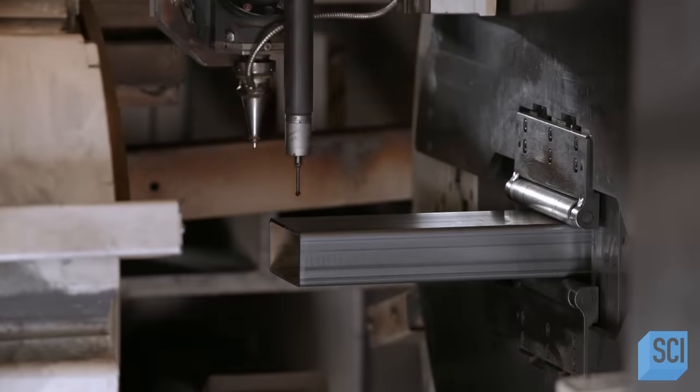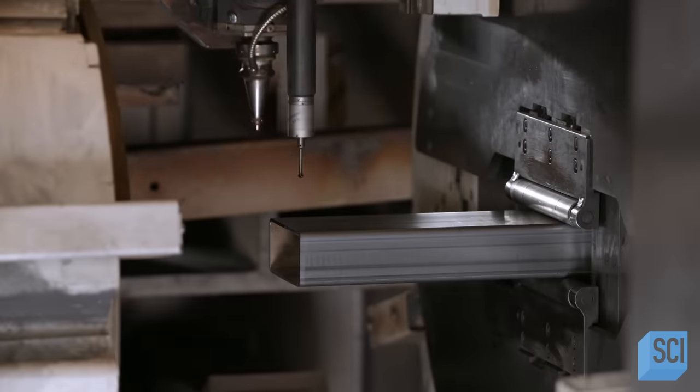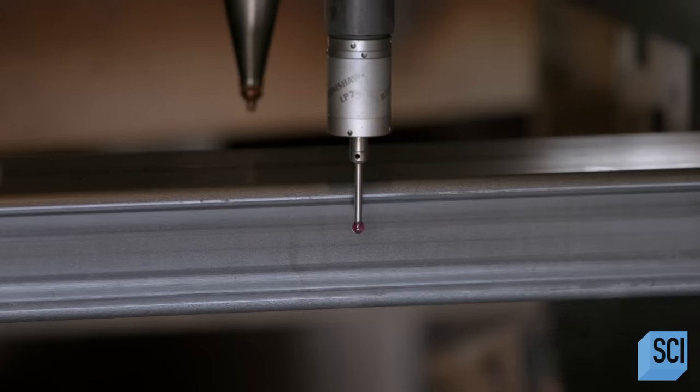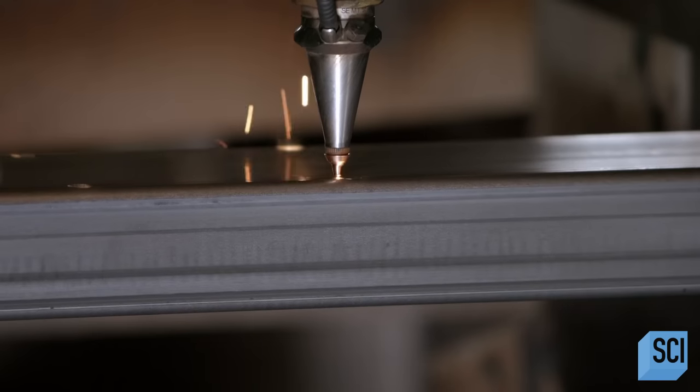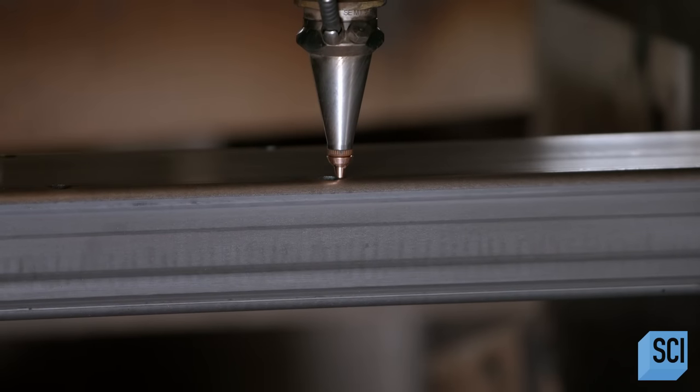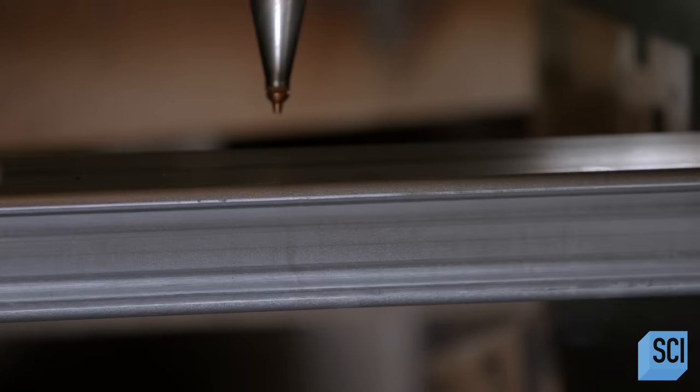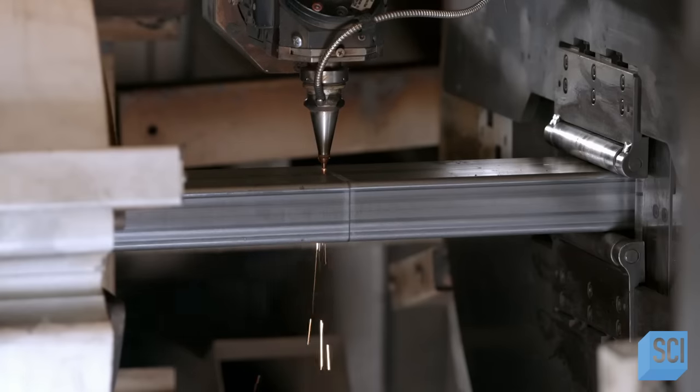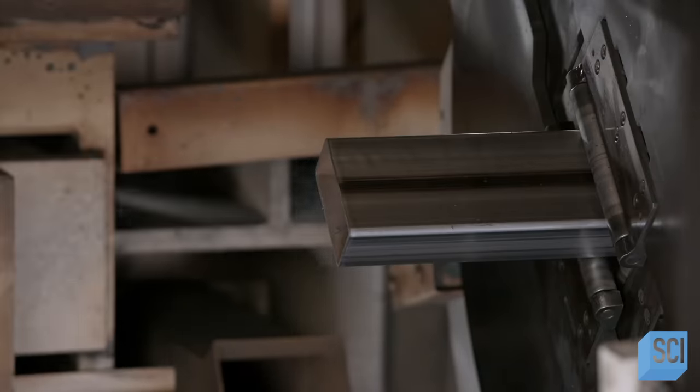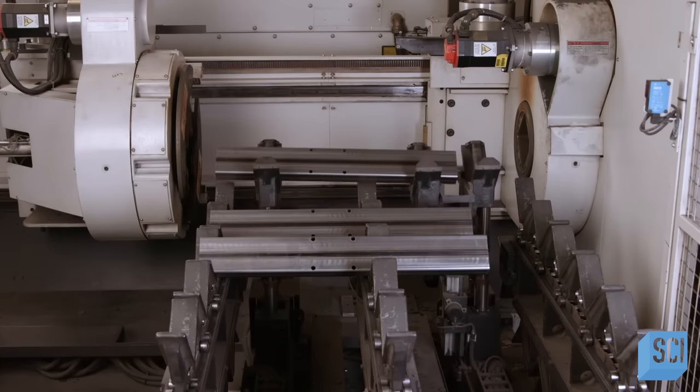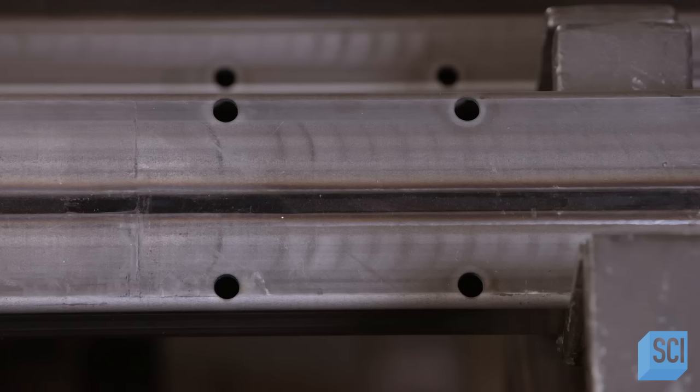Production starts with steel tubing for the base. A probe locates the center of the tubing. This reference point allows a computerized laser cutter to find the exact spots to cut assembly holes. With the assembly holes cut, the laser slices the tubing to the correct length. An automated system retrieves the part and transfers it to a holding area.